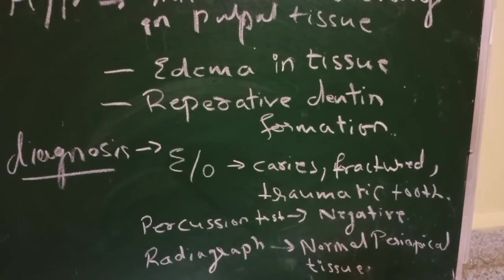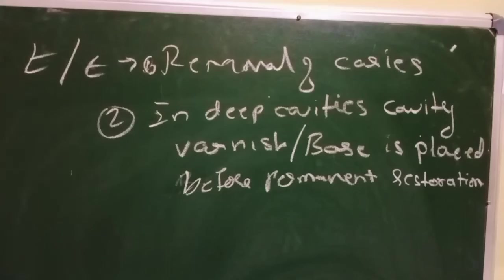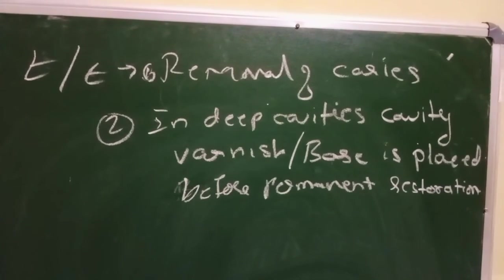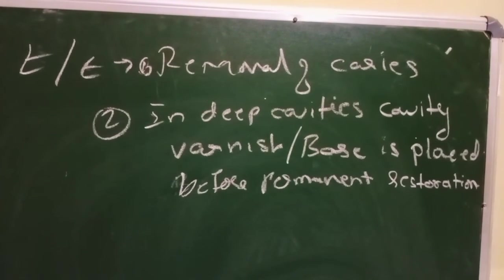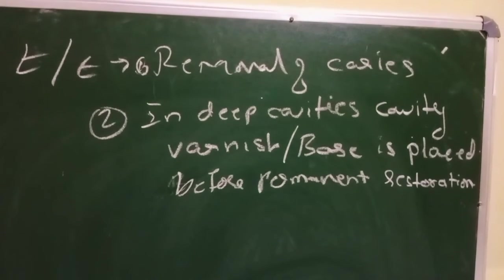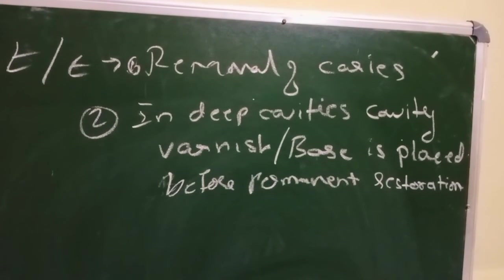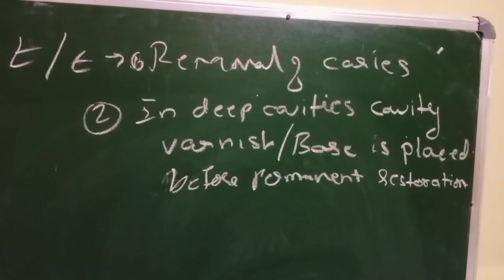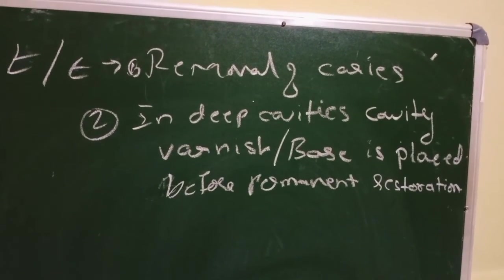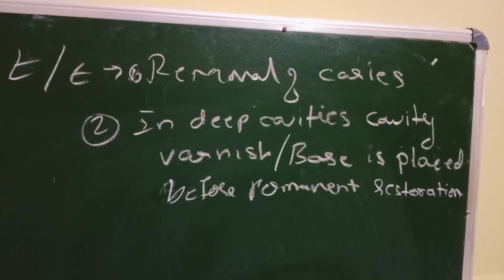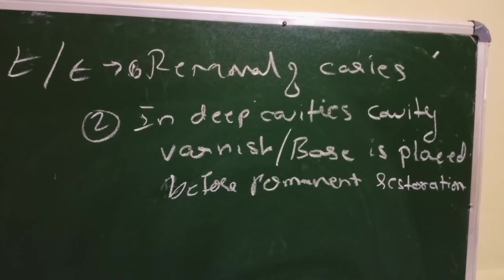The treatment of reversible pulpitis involves removal of the caries. In deep caries, we can go for varnishes and base before placement of the permanent restoration, so that the patient does not have pain even after the stimuli. Thank you.